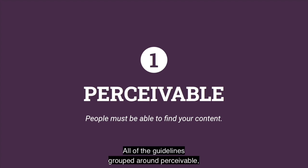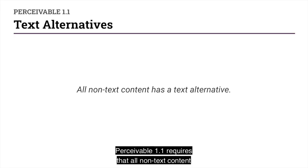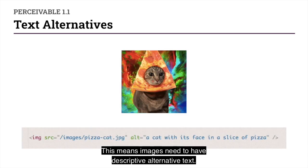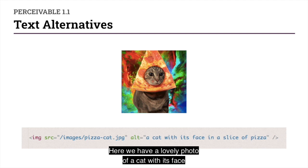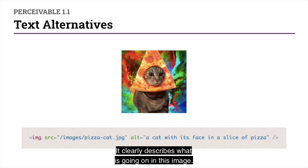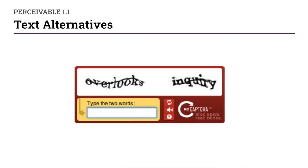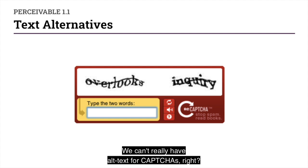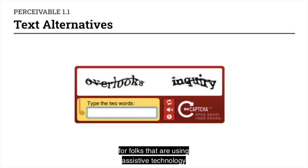All of the guidelines grouped under perceivable revolve around making sure that people are able to find your content. Perceivable 1.1 requires that all non-text content has a text alternative. This means images need to have descriptive alternative text. Here we have a lovely photo of a cat with its face in a slice of pizza, and our alternative text reflects that — it clearly describes what is going on in the image. This also applies to CAPTCHA images. We can't really have alt text for CAPTCHAs because it kind of defeats the purpose — the robots can read the alt text. So we need to provide another alternative for folks that are using assistive technology such as a screen reader.